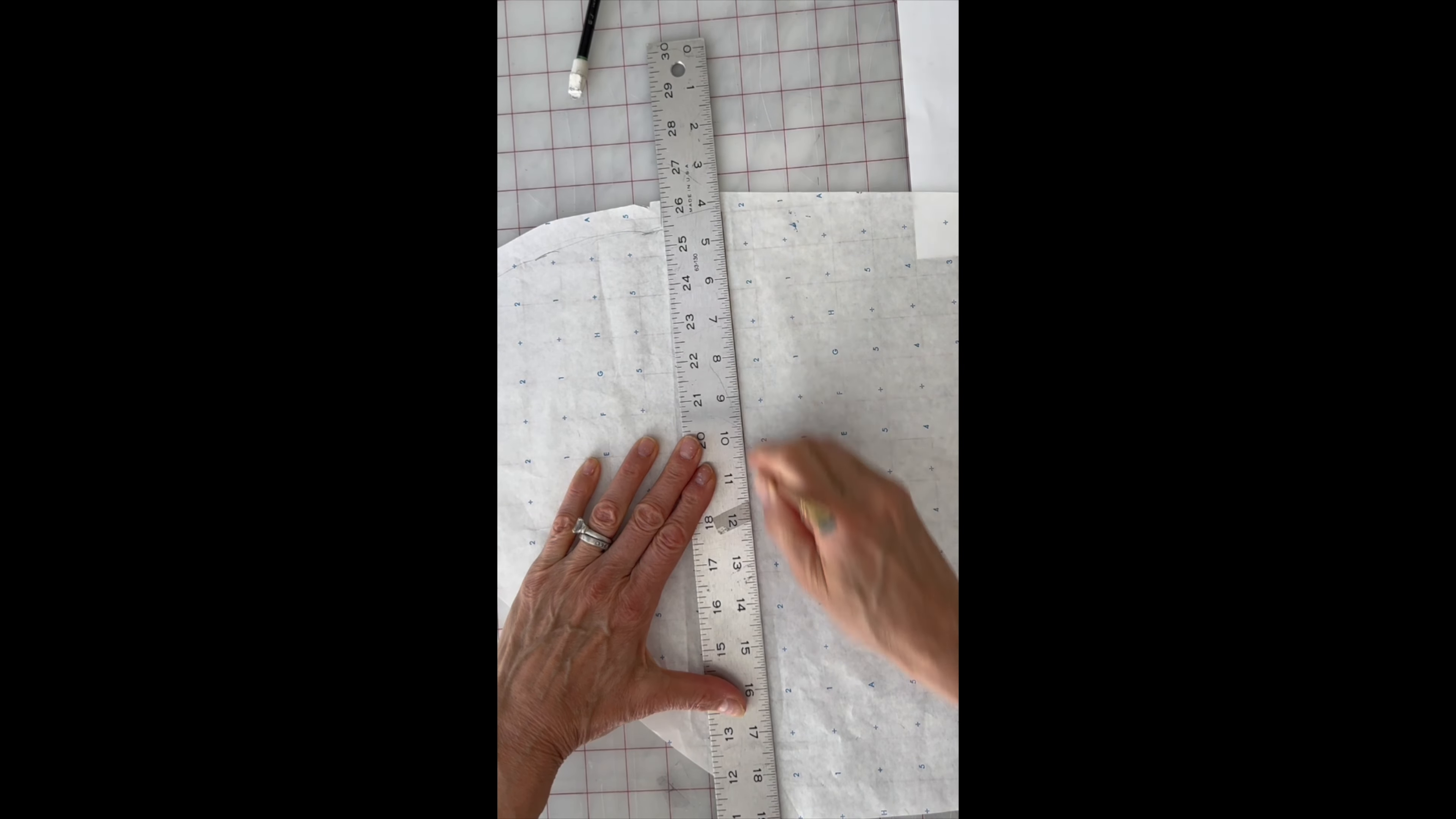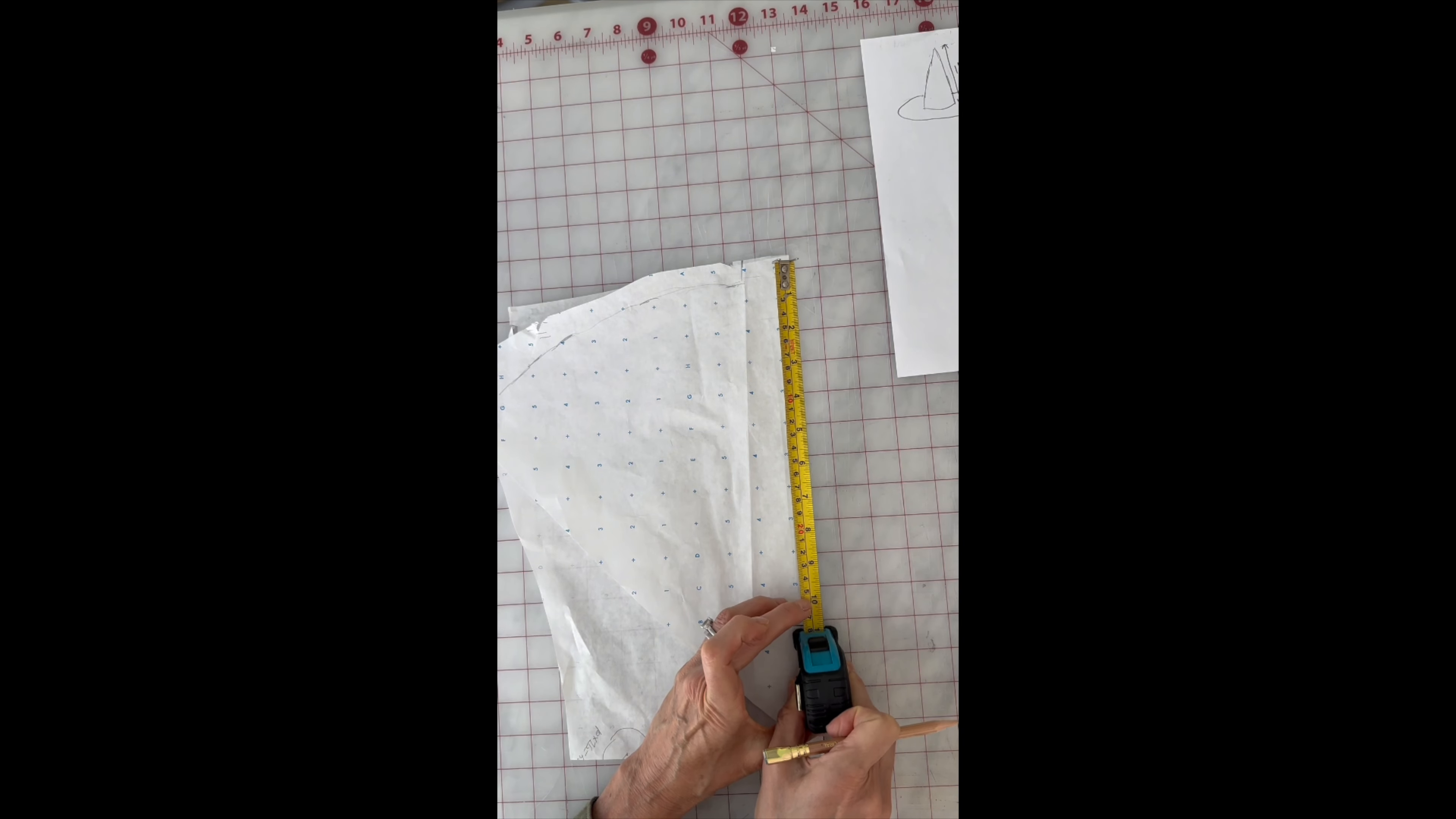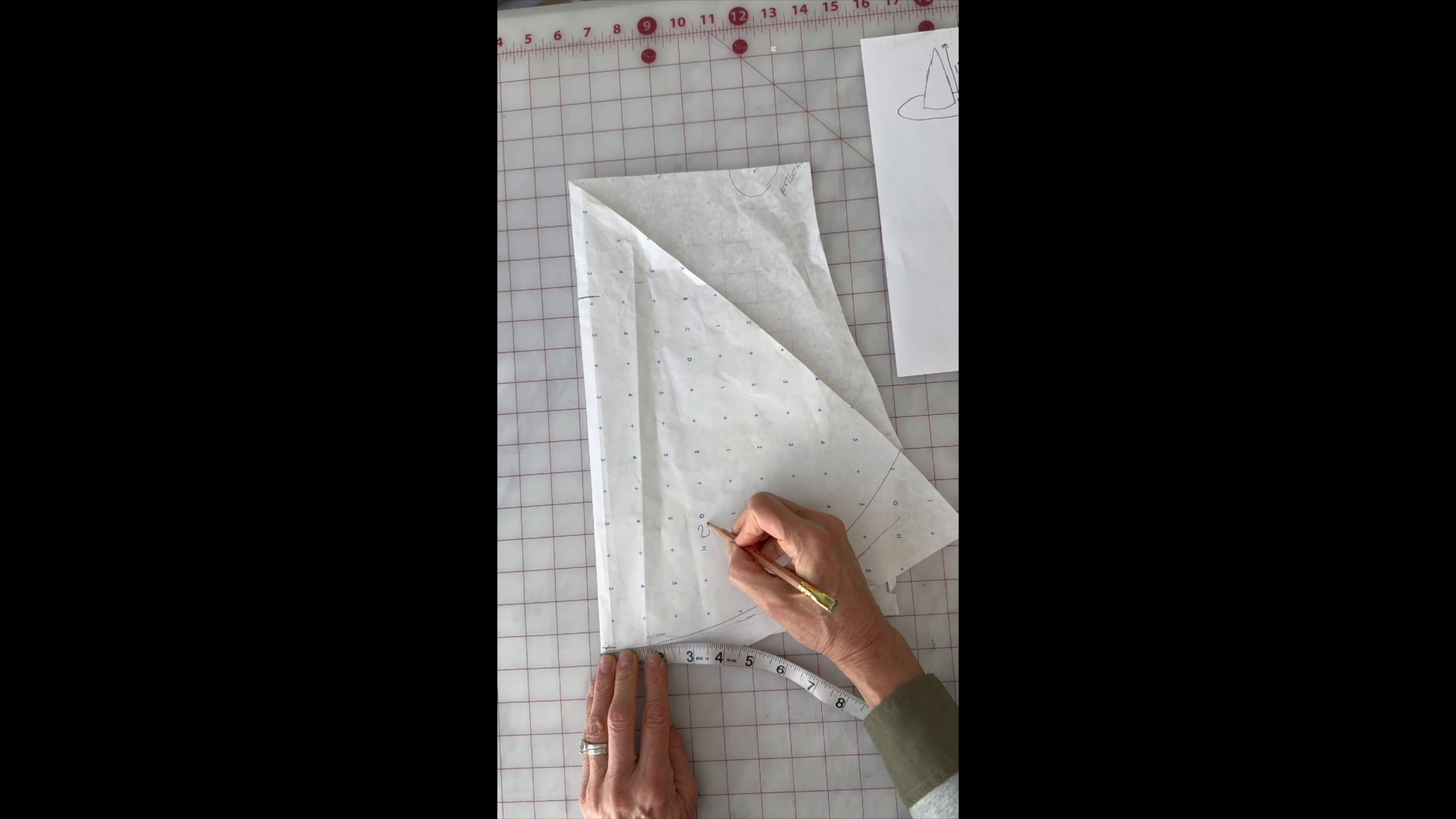Fold the paper in half and measure 11 inches at the fold. Now take a carpenter's tape and fix it on 11 inches so it doesn't move. Hold it at the top and rotate with the pencil at the other end.